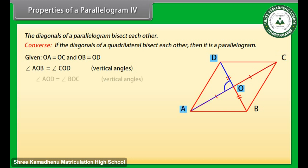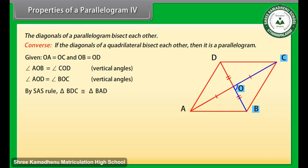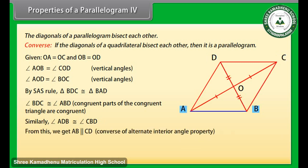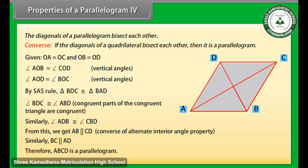Similarly, angle COD is equal to angle BOC. So by SAS rule, triangle AOB is congruent to triangle COD. Therefore, angle ABD is equal to angle BDC — CPCT. From this we get AB is parallel to CD. Similarly, BC is parallel to AD using the converse of the alternate interior angle property. Therefore ABCD is a parallelogram.